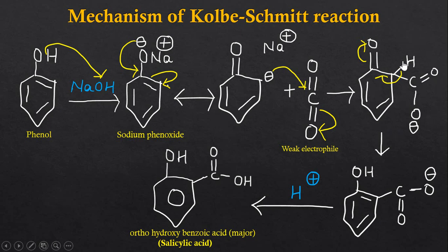Here this keto form is converted into enol form by moving these sigma bond electrons of the carbon-hydrogen bond and these pi electrons, and now we will get this structure.